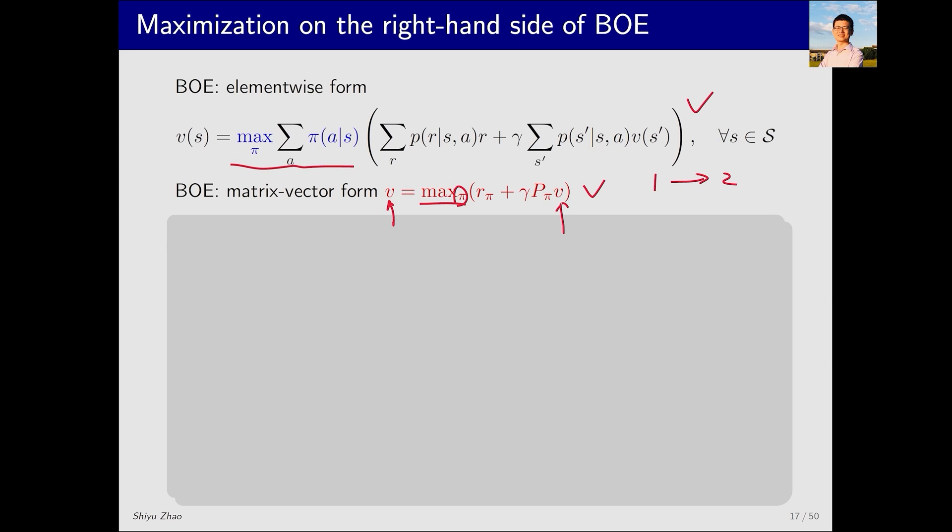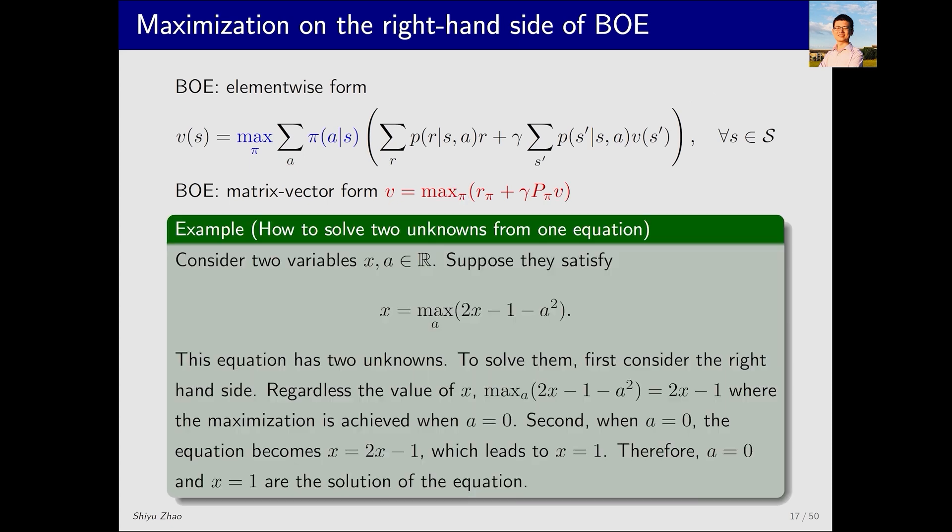It's actually quite simple, let me illustrate with an example. Consider two variables, x and a, satisfying this equation. This equation is designed to mimic the Bellman optimality equation. It also involves solving for the optimization on the right-hand side. How do we solve this equation?